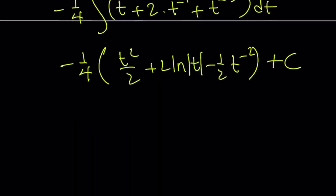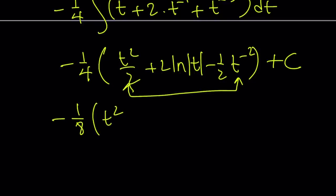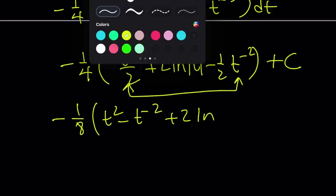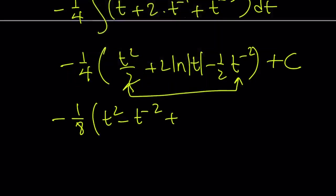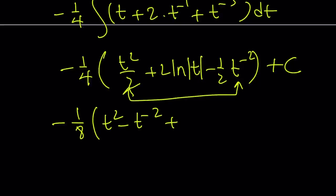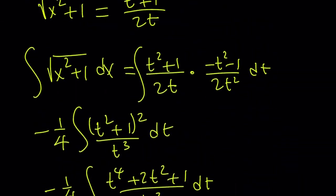One thing to keep in mind here is these are related. I can take out a one-half, so that's going to make negative one-eighth times t squared minus t to the power of negative 2, plus 4 ln absolute value of t. Now, what is t? Remember we initially set square root of x squared plus 1 equal to x plus t, so t becomes square root of x squared plus 1 minus x. That's going to be a very special expression.